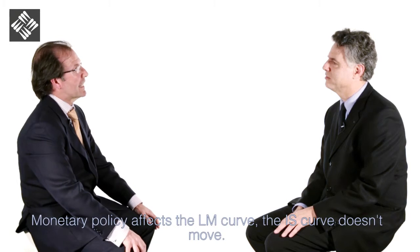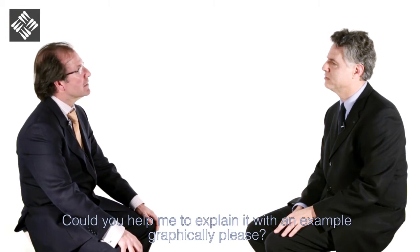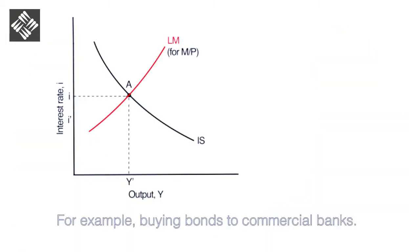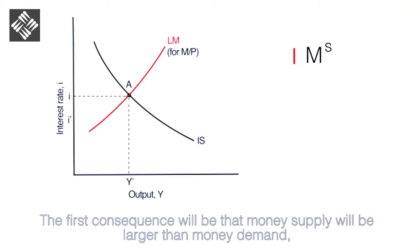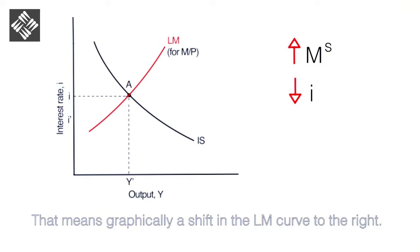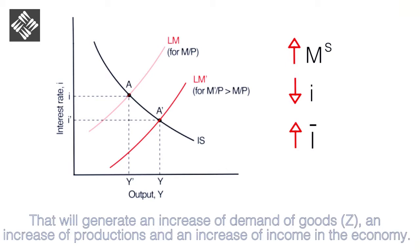Monetary policy affects the LM curve; the IS curve doesn't move. Will you help me to explain it with a graphical example? Sure. Let's assume that the government decides to expand the amount of money in the economy — for example, by buying bonds from commercial banks. The first consequence will be that money supply will be larger than money demand, and the interest rates will diminish to correct this disequilibrium in the monetary market. That means, graphically, a shift in the LM curve to the right. As a consequence of the interest rate reduction, companies will invest more, generating an increase in demand for goods, an increase in production, and an increase in income.